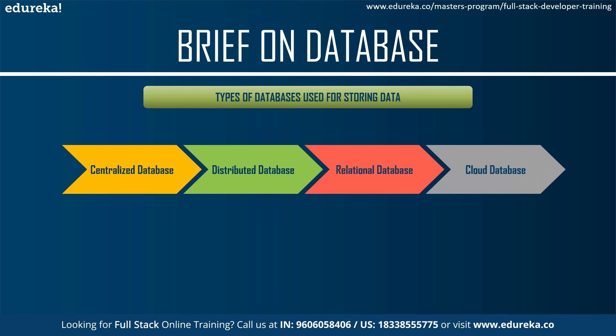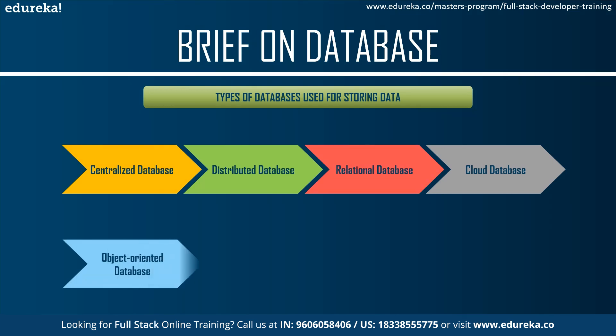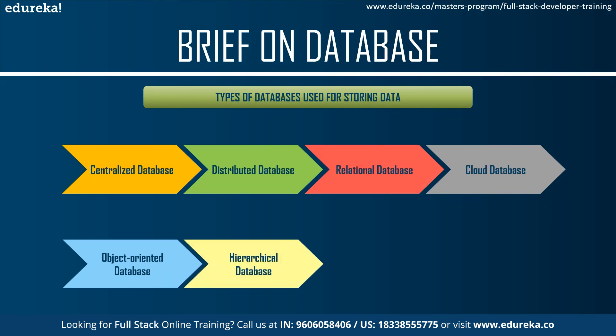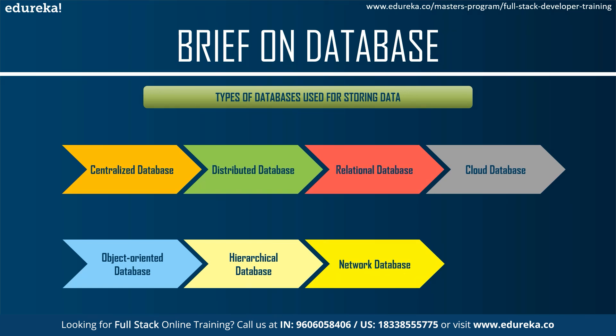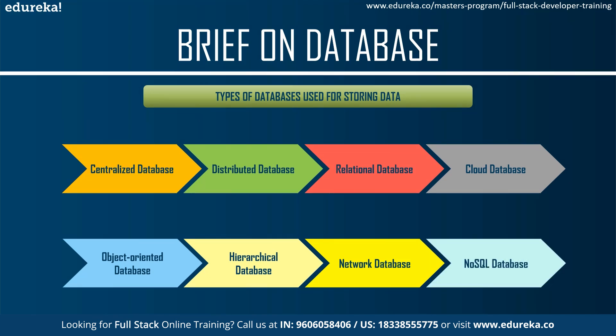A cloud database stores data in a virtual environment and executes over cloud computing platforms — AWS and Microsoft Azure are among the few. Object-based databases use a data model approach for storing data. Hierarchical databases store data in the form of parent-child relationship nodes. Network databases follow the network data model, representing data as nodes connected via links.